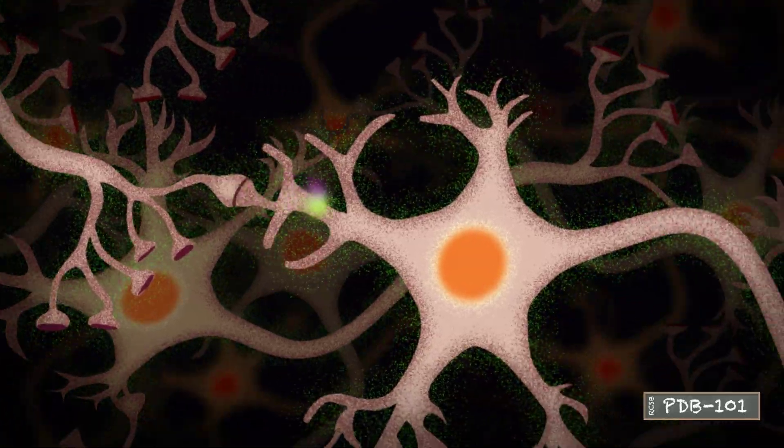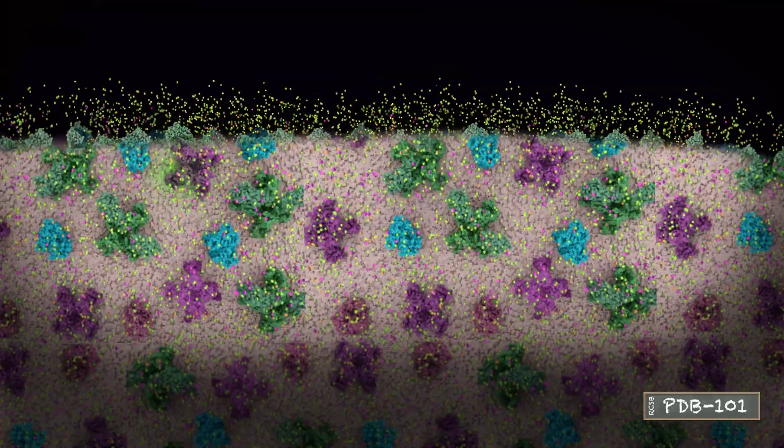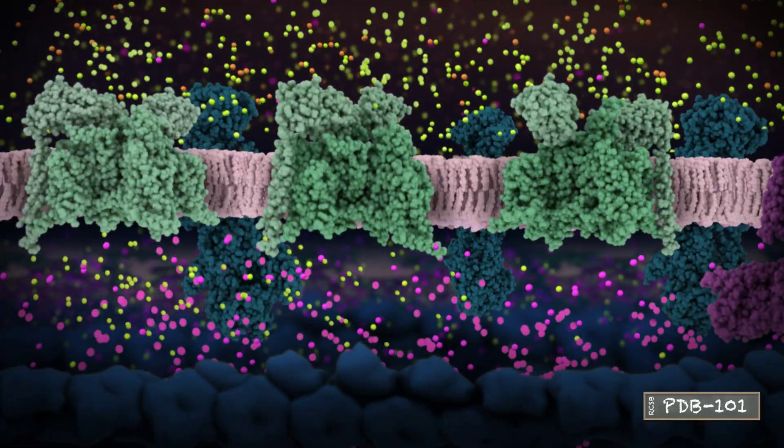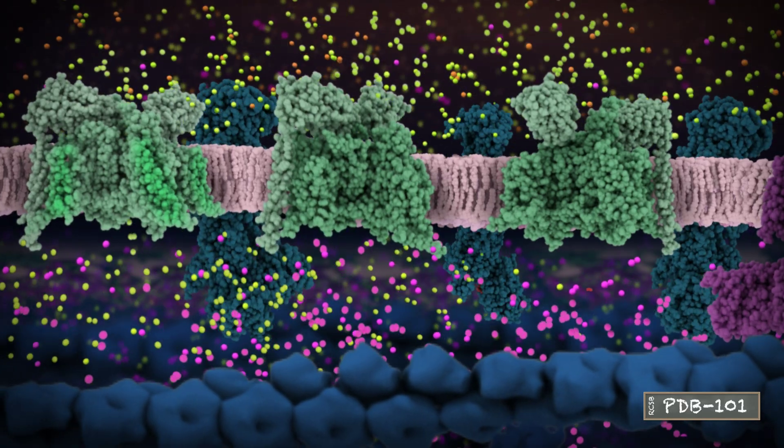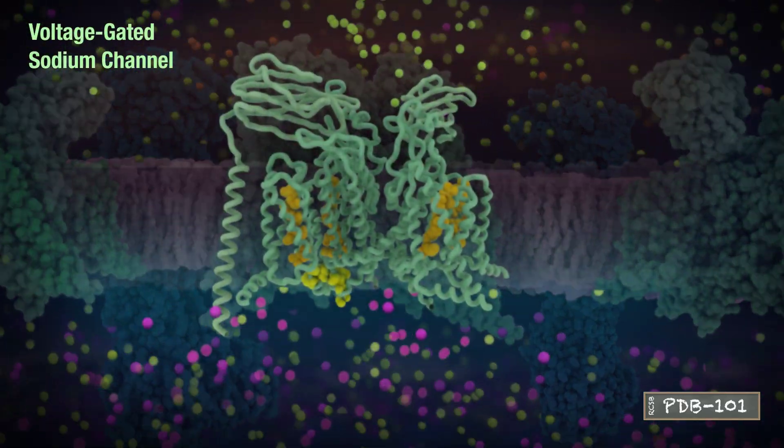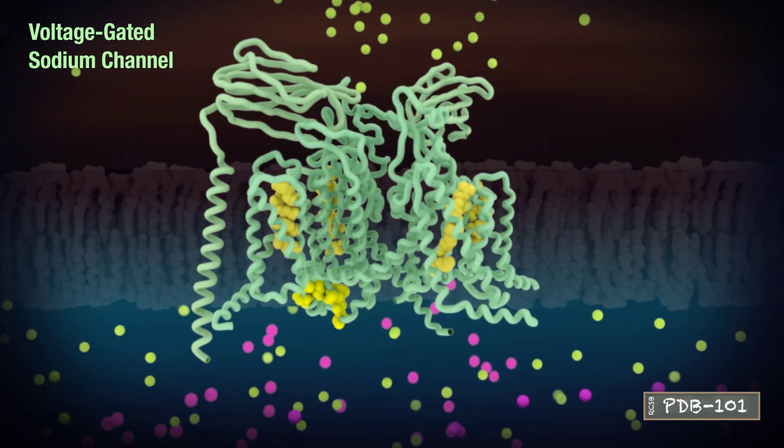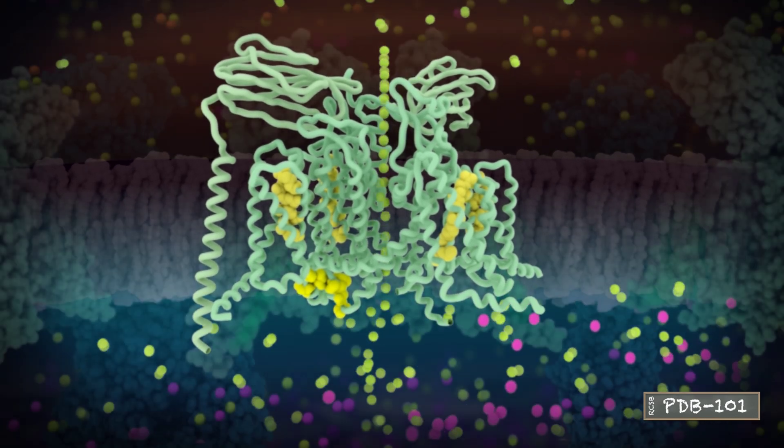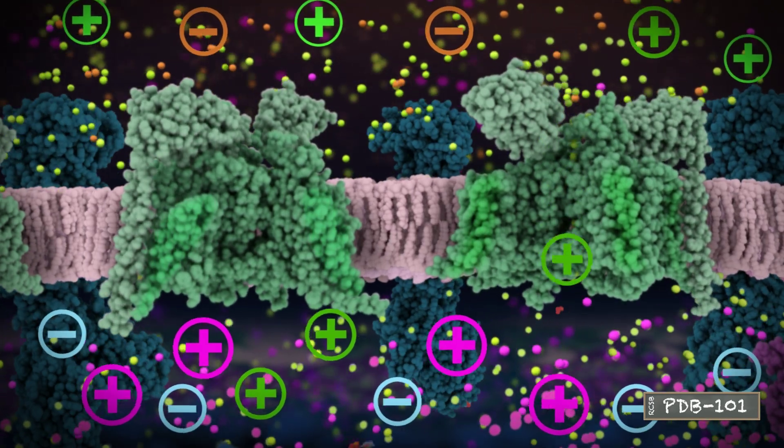To transmit a signal, the neuron creates an action potential which travels down the axon. The action potential is mediated by the opening of the voltage-gated sodium channels which allows sodium to enter the neuron. This depolarizes the membrane in that local area.